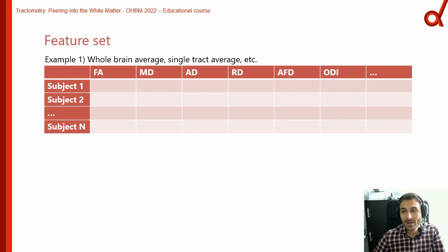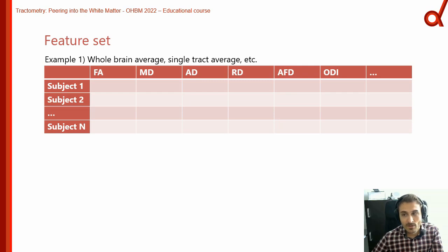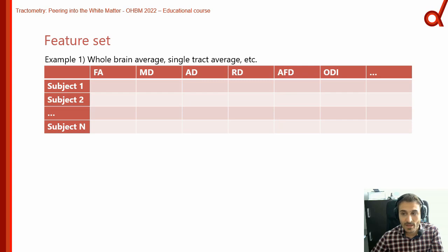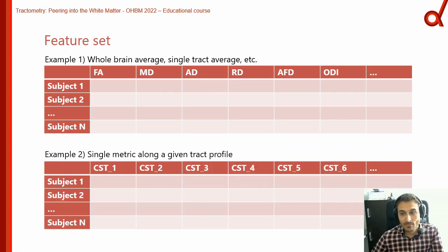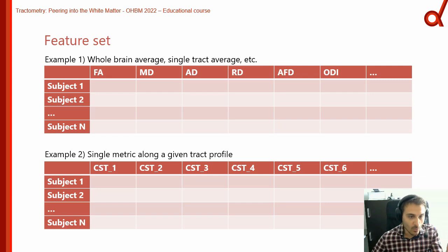To do that, we first need to talk about how we would structure our data sheet, which depends on your hypothesis or research questions. The first example assigns each diffusion metric to a feature or column, with each subject as a sample — the metrics are simply averaged over a given tract or inside the entire white matter. The second example shows a more along-track profiling approach, where the features are the tract profiles, for example plotting FA along the entire corticospinal tract from point 1 to 100, with subjects as the rows.